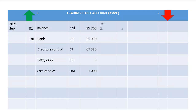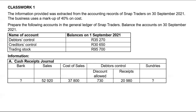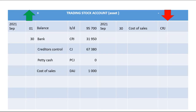What will result in this account decreasing is cost of sales when we sell goods. We can sell goods for cash — that information will be found in our CRJ, specifically the total of your cost of sales column, which is 37,800. We will put that on the credit side of our trading stock account as 37,800.